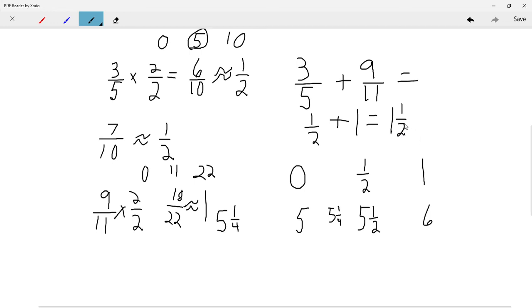Estimating to the nearest half. If they ask you to estimate something to the nearest half like this, all you're doing is rounding the fractions to the nearest half first and then adding those rounded values. So one half plus one equals one and a half in this case. So hopefully that is helpful.